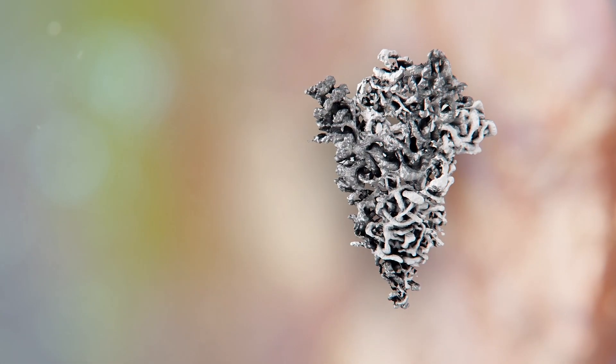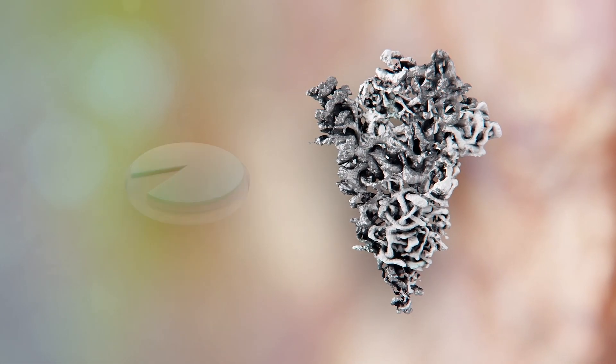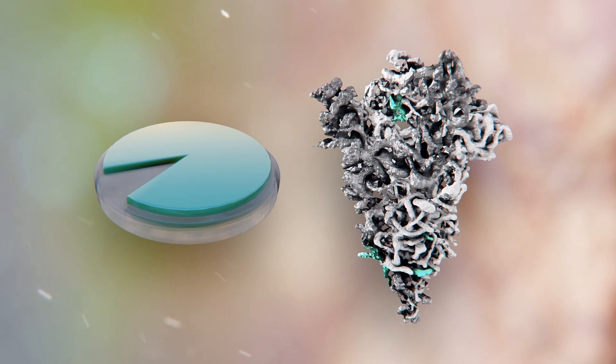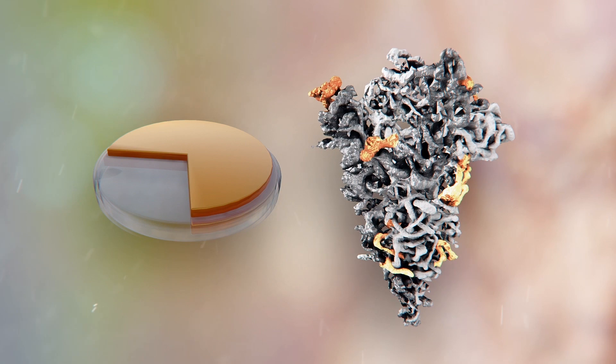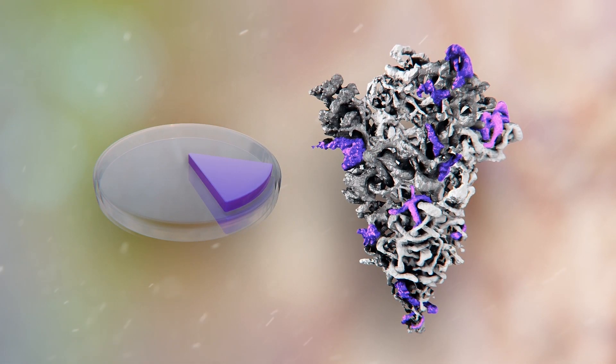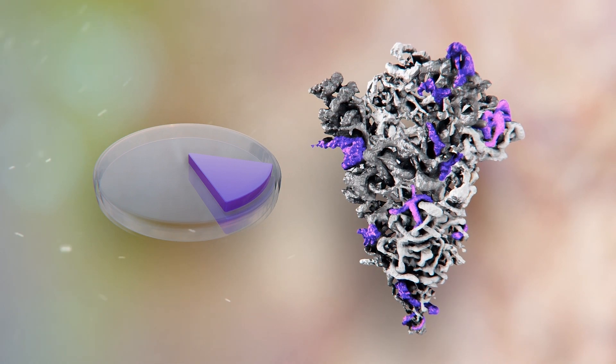The researchers identified host-derived sugars, or glycanes, embedded in the envelope of the spike protein, as well as the concentration of the sugars in each location on the spike. Glycanes are what viruses use for hiding from the immune system and sneaking into human cells.